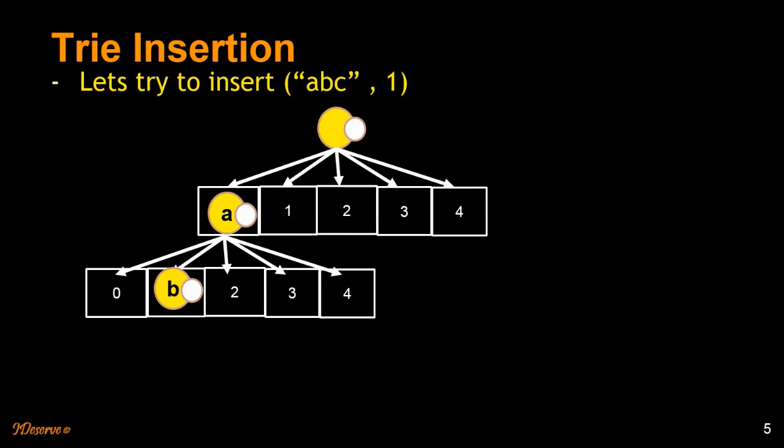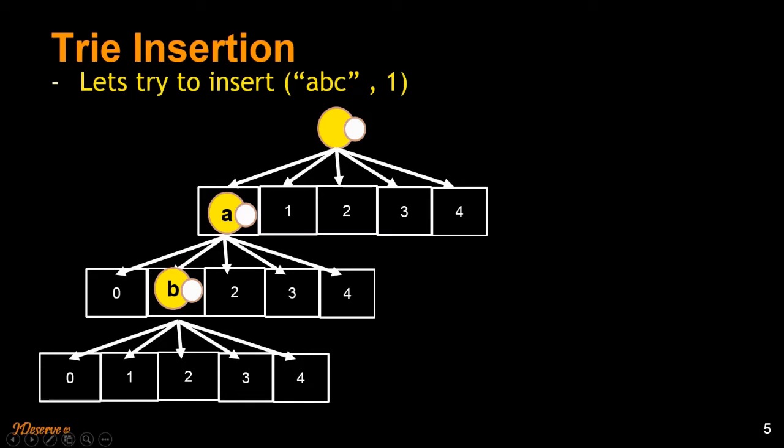So what we are going to do next is we are going to initialize C which is the child of B. So where does C lie? C lies on the second index of that array of children. Does A, B, C have any value corresponding to it? Yes. It does. So we populate the value here. 1. So A, B, C corresponds to 1. A doesn't correspond to any value. B doesn't correspond to any value. A, B doesn't correspond to any value. A, B, C does. That's how we insert a key value pair.